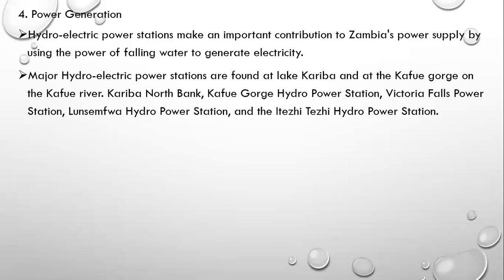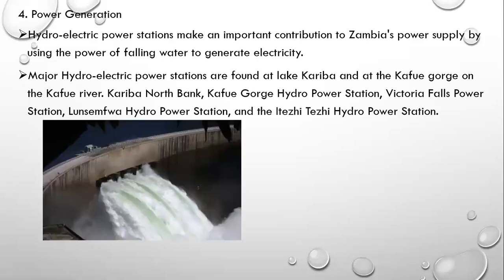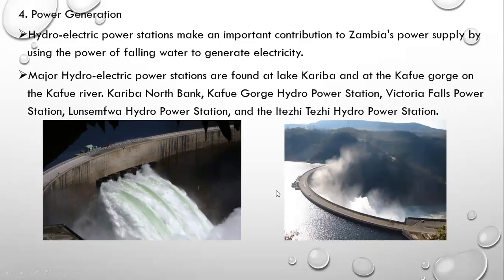As you're all aware, Victoria Falls forms on the Zambezi River, so these drainage features are very important. This is the Kariba North Bank where energy is being generated. We will discuss energy generation in detail at a later stage.